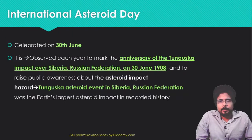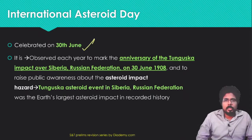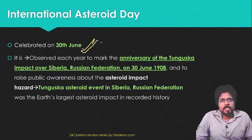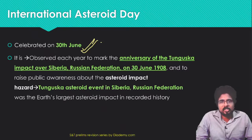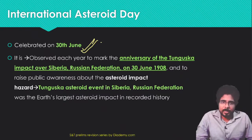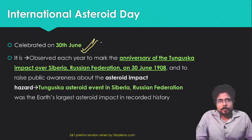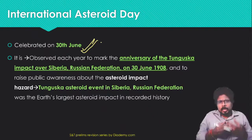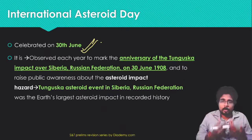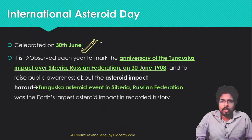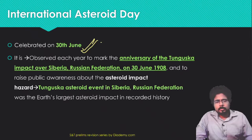International Asteroid Day is celebrated on 30th June. It is observed each year to mark the anniversary of the Tunguska impact over Siberia, Russian Federation, on 30th June 1908, and to raise public awareness about asteroid impacts. There was a massive asteroid impact in that region in 1908, and to commemorate it we celebrate International Asteroid Day, helping scientists raise awareness about the potential impact of asteroids.